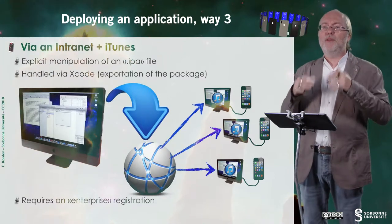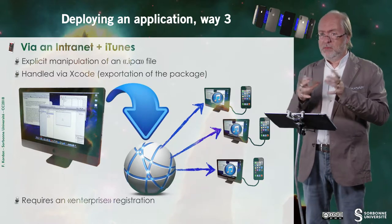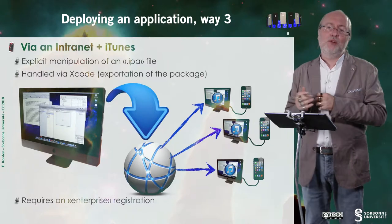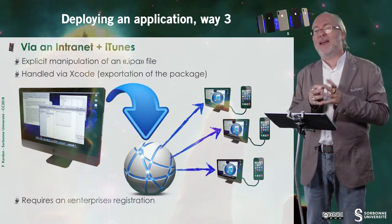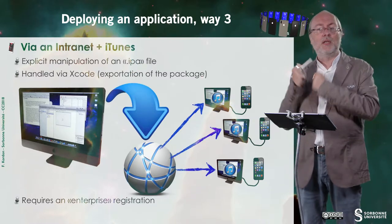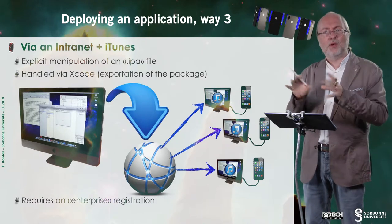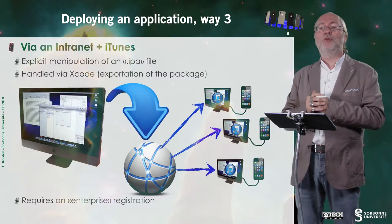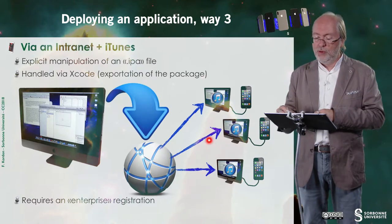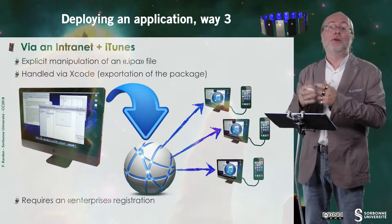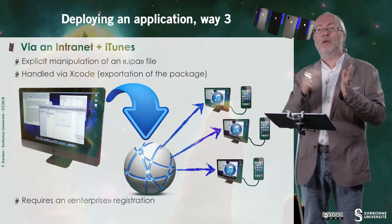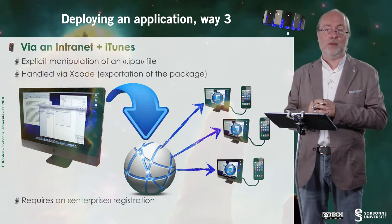The third way is via an intranet, and thanks to the use of iTunes. Here you have a specific deployment. You are compiling and building your application in a specific condition. In fact, you produce what's called a sort of archive, and the prefix of such archive is IPA. This is the same as the one that you send to the App Store, but this one is set up differently. This package can be uploaded to an intranet, and then people who want to retrieve your application — typically in your company — just have to fetch the package from the intranet and drop it into iTunes. As soon as they synchronize their phone, the synchronization will deploy the application into the device.